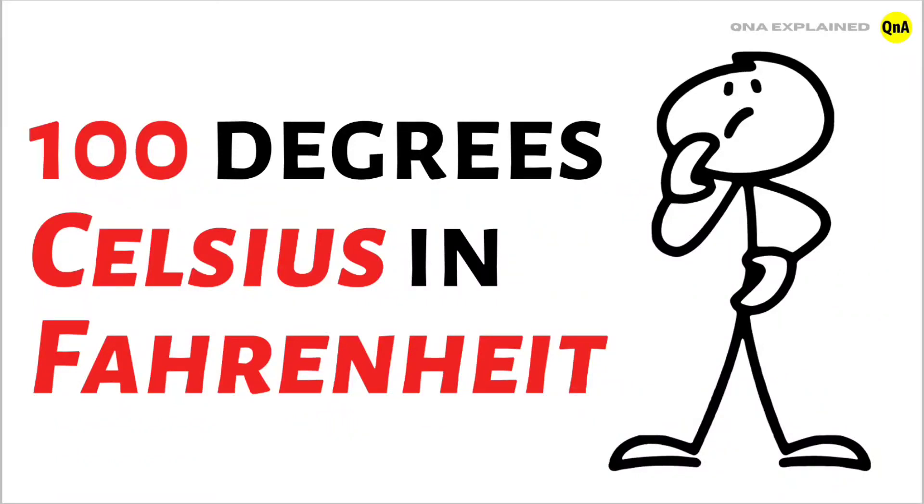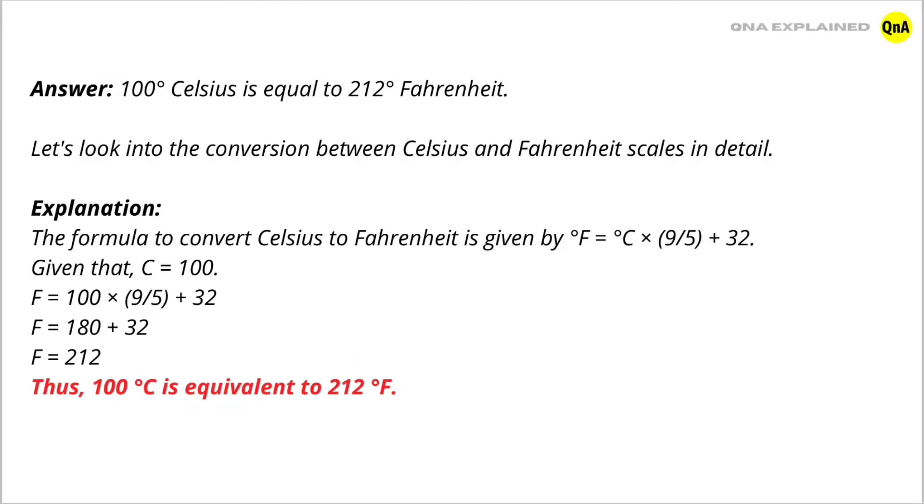100 degree Celsius in Fahrenheit. Answer: 100 degree Celsius is equal to 212 degree Fahrenheit. Let's look into the conversion between Celsius and Fahrenheit scales in detail.